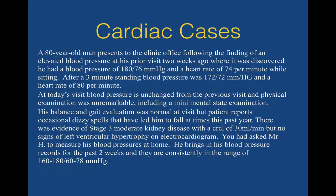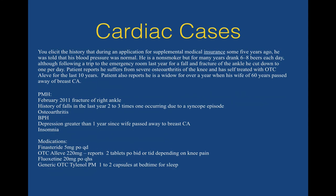The next case: an 80-year-old man presents to the clinic following finding of elevated blood pressure. At his prior visit two weeks ago, he had a blood pressure of 180 over 76 and a heart rate of 74 while sitting. After three minutes, his standing blood pressure was 172 with a heart rate of 80 — testing for orthostatic hypotension, which is defined as a systolic pressure drop of 20 mmHg. In this case it dropped, but not 20 mmHg, so he does not have orthostatic hypotension. At today's visit, his blood pressure is unchanged. He reports occasional dizzy spells that have led to falls at times. He has stage 3 kidney disease with a creatinine clearance around 30 mL per minute and no signs of left ventricular hypertrophy. Home blood pressure records are still high — this gentleman has isolated systolic hypertension.